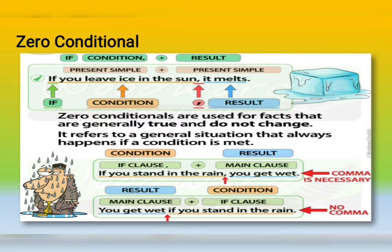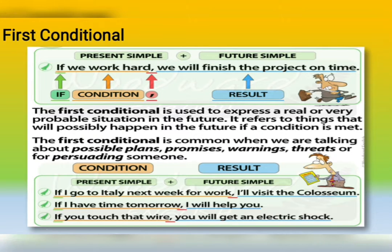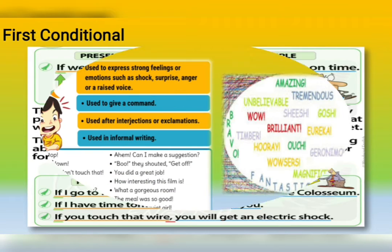Zero conditional — we use it when talking about facts that are generally true and don't change. If you leave ice in the sun, it melts. We have the condition and the result, both using the present simple. The first conditional is when we are talking about something that is possible in the future. We use the condition and the result; the result is written with 'will' and the condition with the present simple.